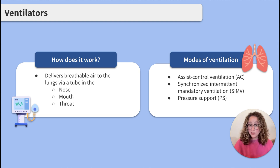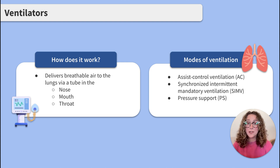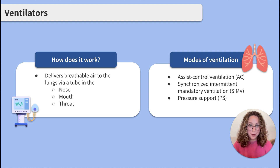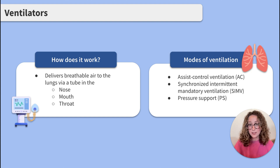How does a ventilator work? A ventilator is a machine that delivers breathable air to a client's lungs. The air is delivered via a tube that can be inserted into one of three places: via intubation into the mouth or nose, most commonly the mouth, or via a surgical opening in the neck known as a tracheostomy.